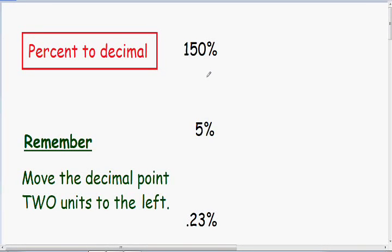So now I want to go over some harder examples of changing a percent into a decimal, and these are still really easy. The only thing that we have to do is move the decimal point two units to the left, and I wrote that for you in green. So let's just get started with our first example.